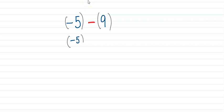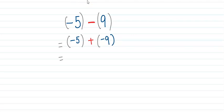Negative 5 will remain as it is, and the subtraction will change into addition, and positive 9 will become negative 9 because we will be adding the opposite. So this tells us that the answer will be negative 14.